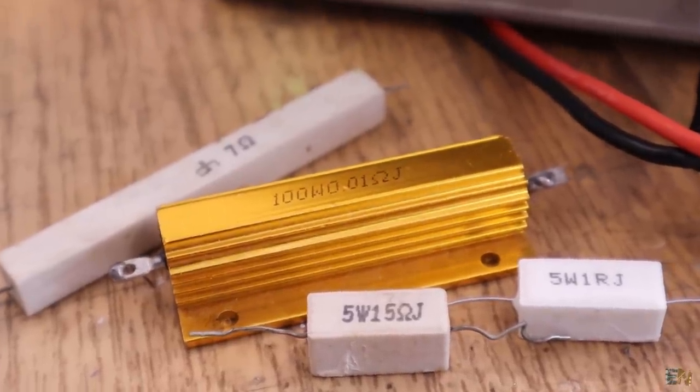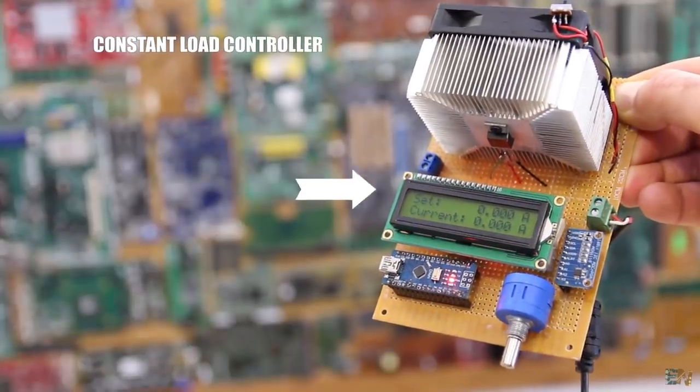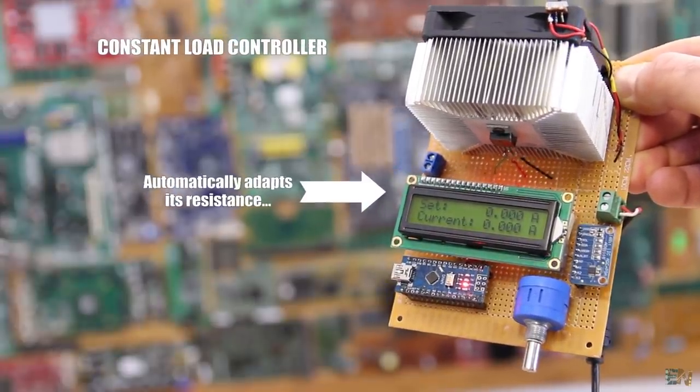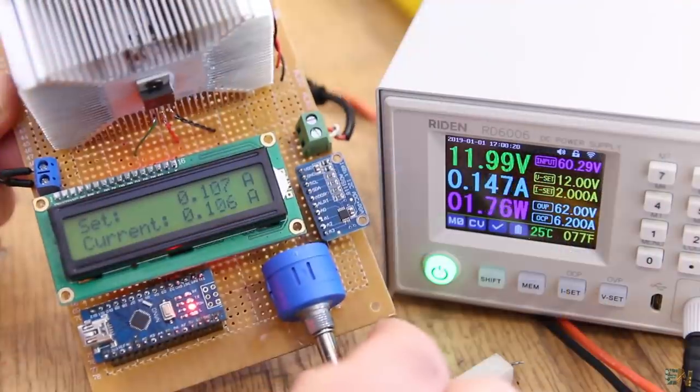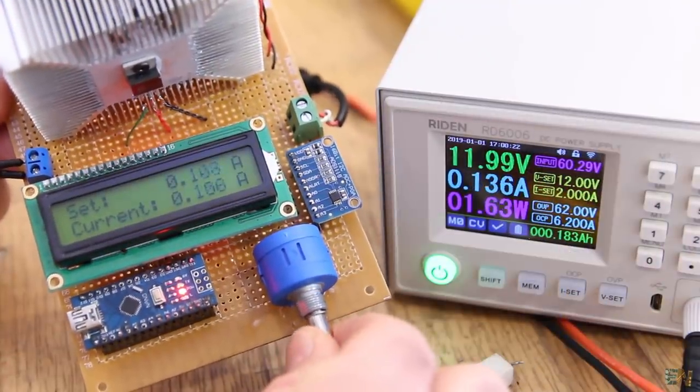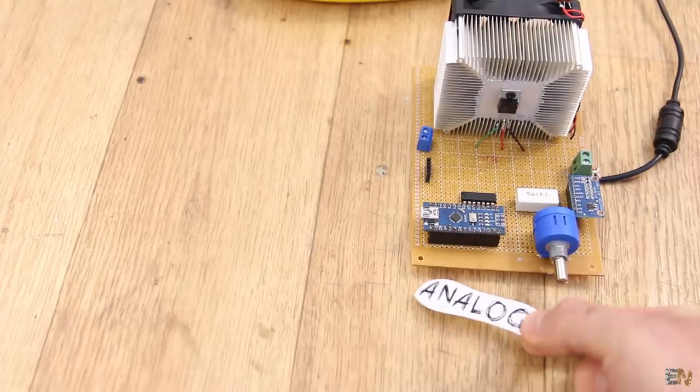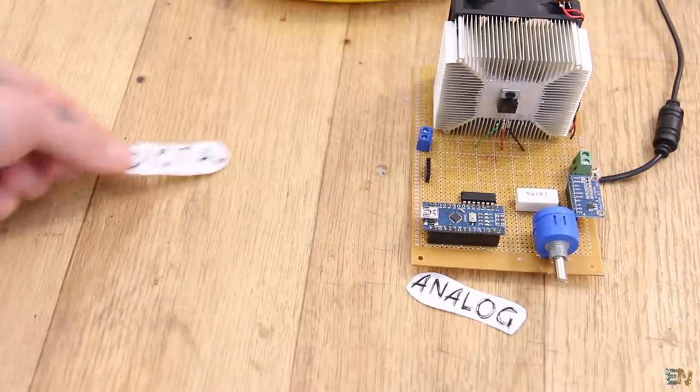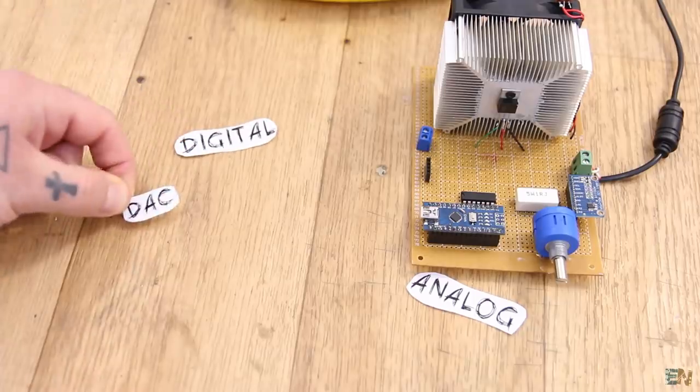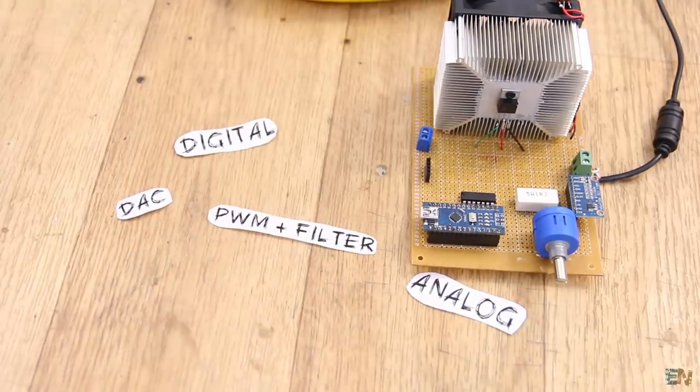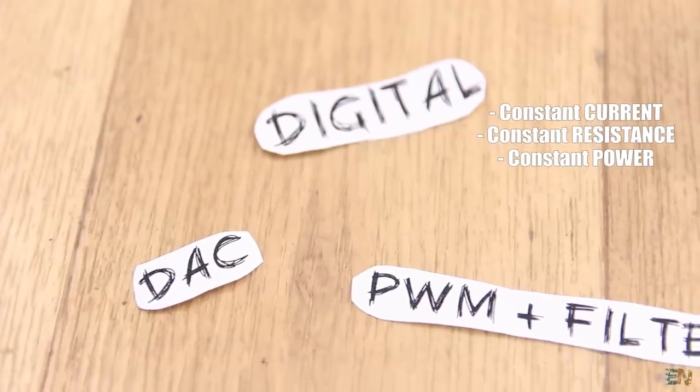A constant load controller is a device that will automatically adapt its internal resistance in such a way that for a given voltage input, it will always draw out the selected amount of current from that supply. There are a few ways to build a constant load controller, but today we'll see just one of the options. In a future video I'm preparing another constant load controller that will be digital, allowing us to set a constant current value, constant resistance, constant power, and so on.